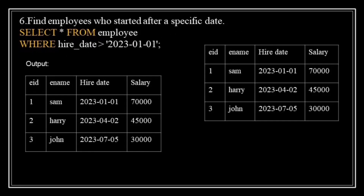Find employees who started after a specific date. The query is: SELECT * FROM employee WHERE hire_date > '2023-01-01'. 'SELECT *' selects all columns from the employee table, and the WHERE condition filters results to include only employees who were hired after January 1st, 2023. The query returns only those employees hired after that date.